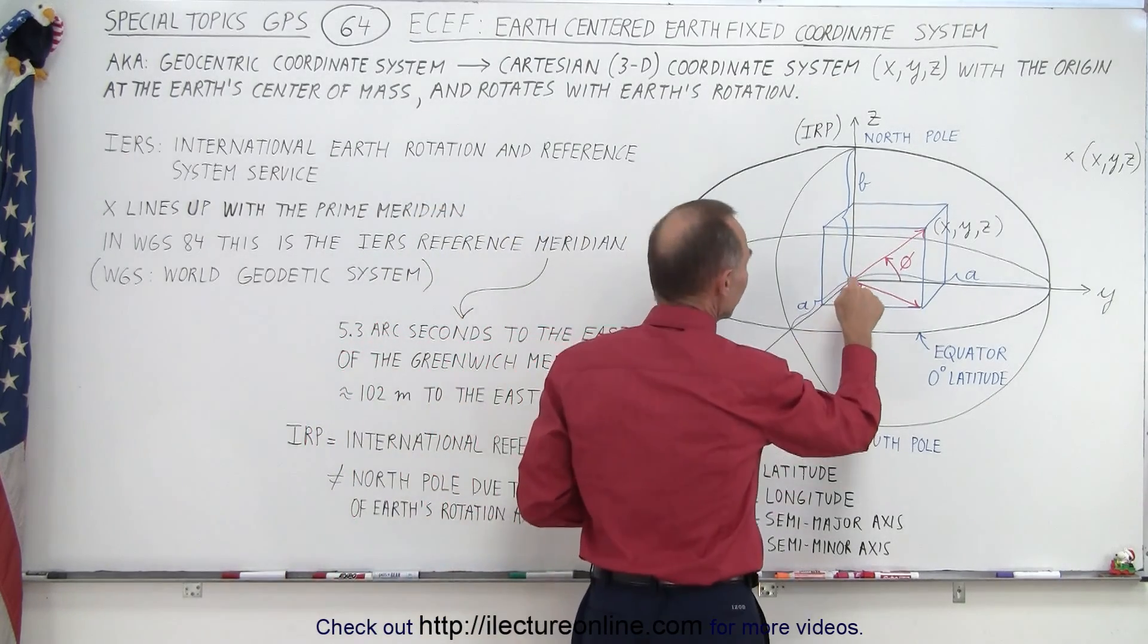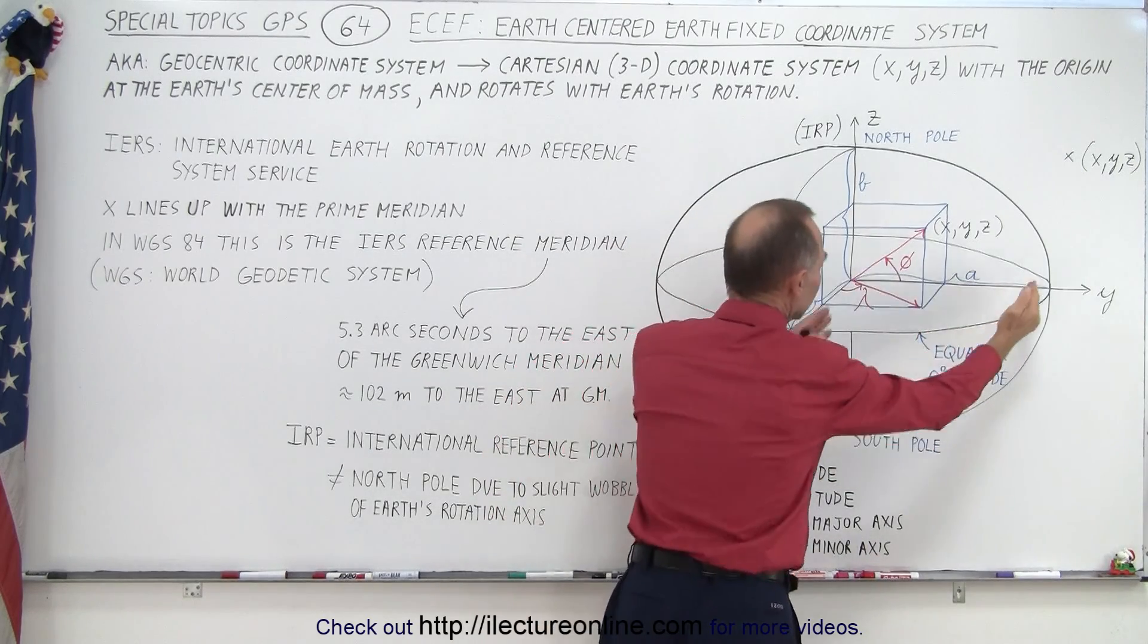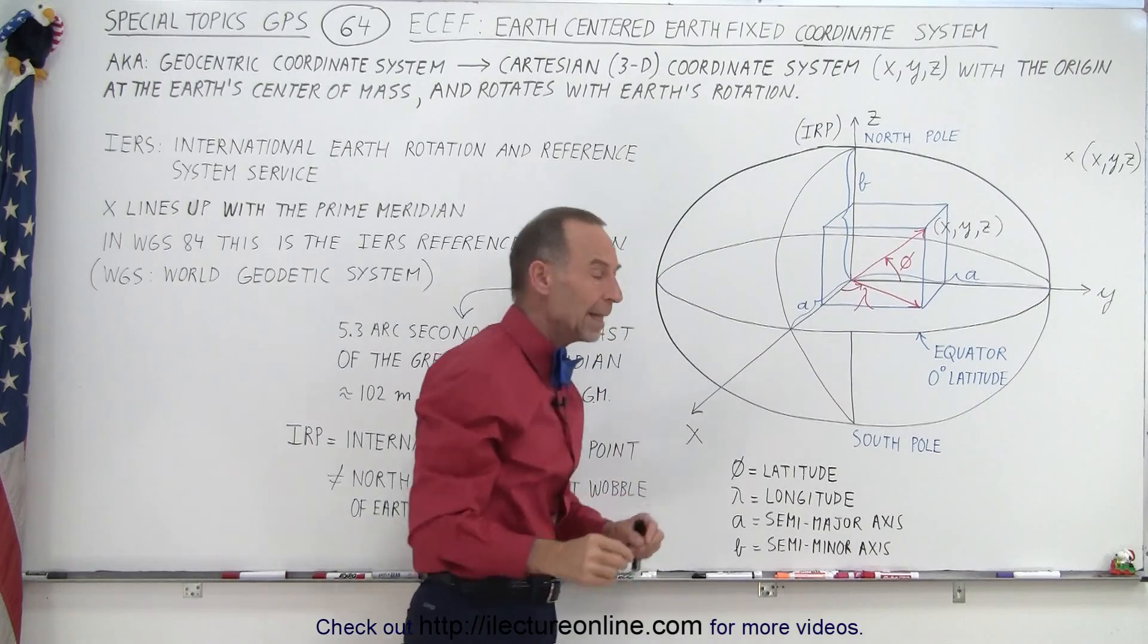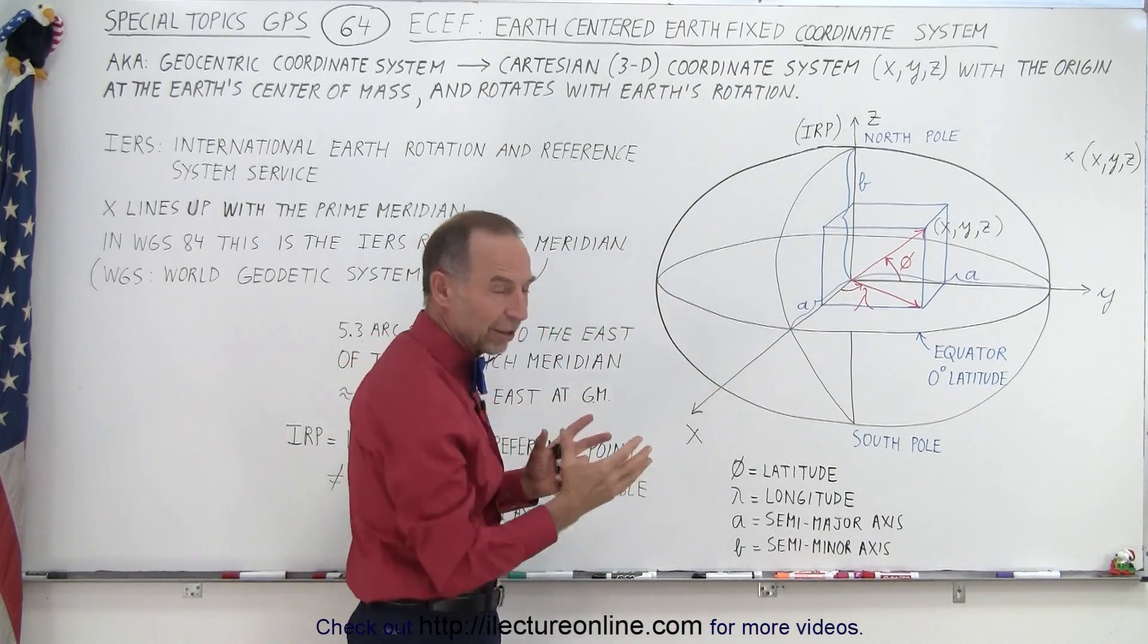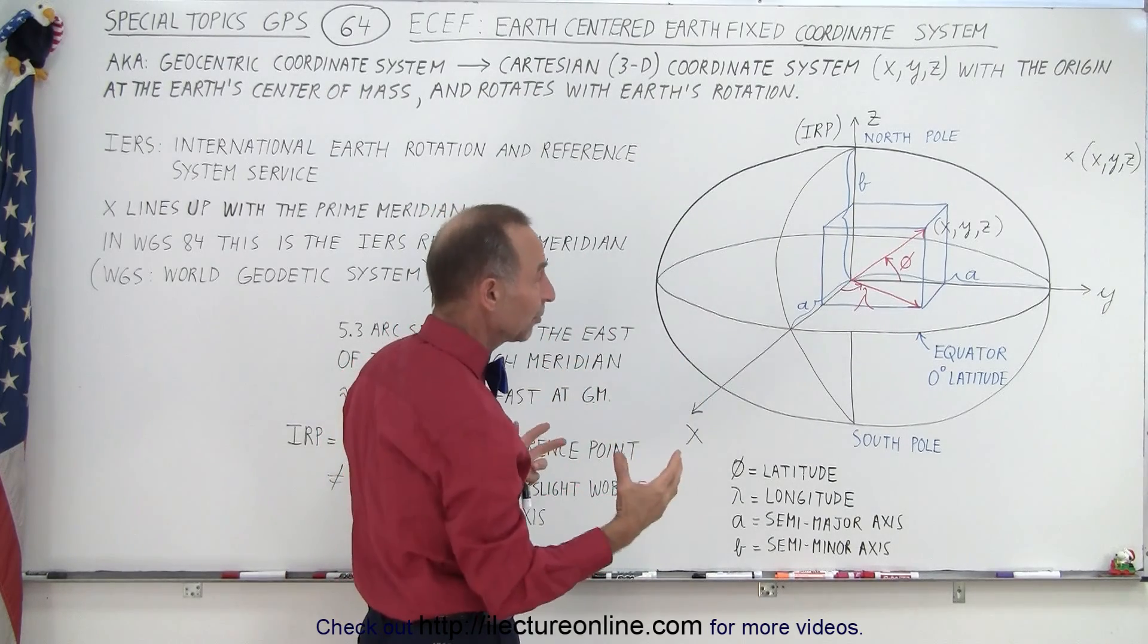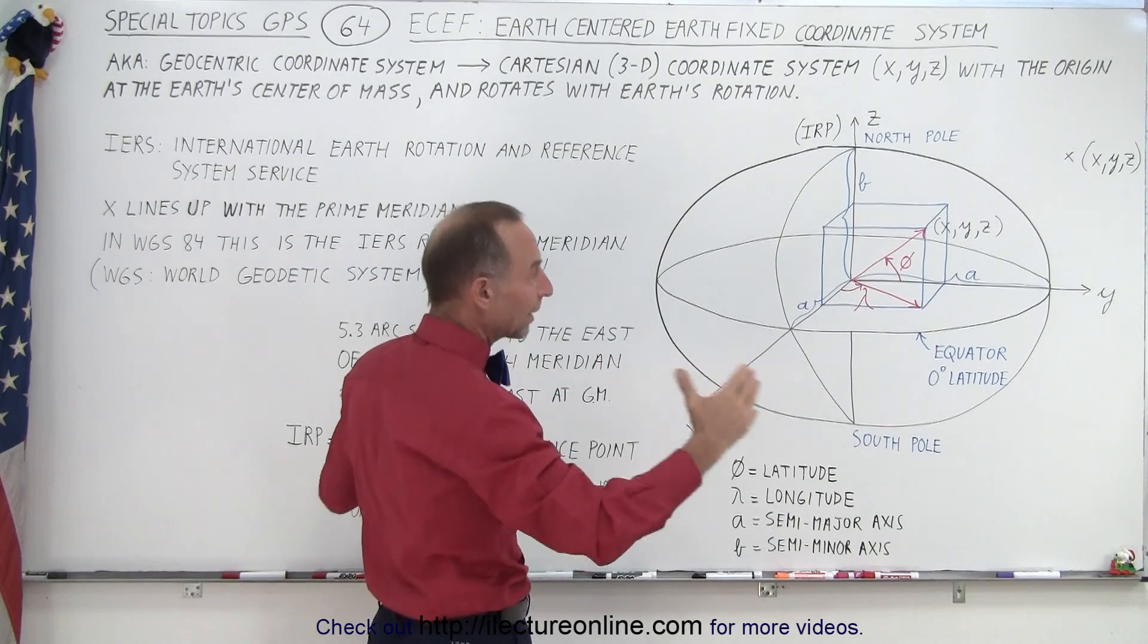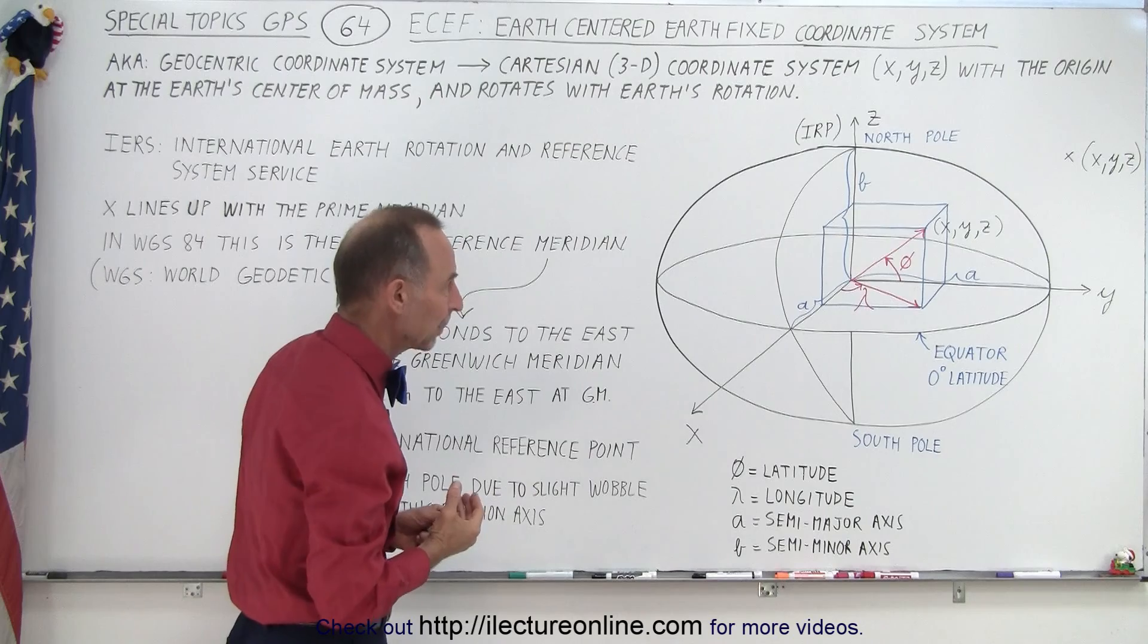Notice that the distance from the center of the earth to the equatorial plane in either the X or the Y direction is known as a, little a, which means it's a semi-major axis. Notice the way the world is drawn, it's kind of drawn like an over-exaggerated ellipse. The earth is somewhat wider at the equator than from pole to pole so we want to give you that sense that that's what's happening.